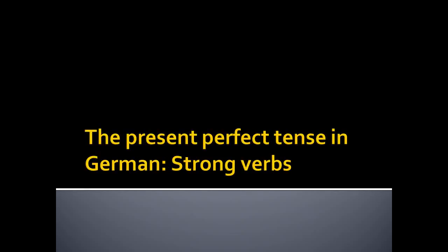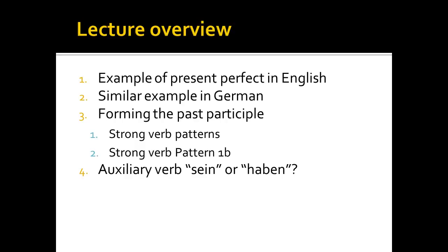Today we're going to take a look at the present perfect tense in German. Specifically, we're going to take a look at how to use strong verbs to form the present perfect tense. We'll begin our lecture with an example of how to form the present perfect tense in English before looking at that same sentence translated in German. After looking at examples, we will look specifically at how to form past participles. Past participles are an essential part of forming the present perfect tense, and we'll see that German strong verbs follow roughly eight conjugation patterns.